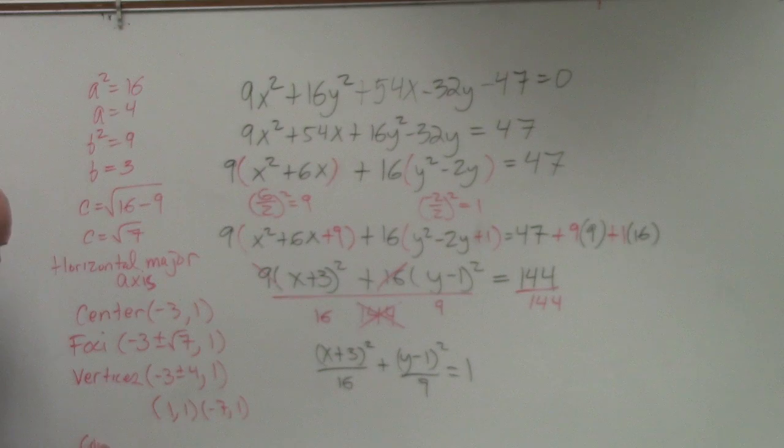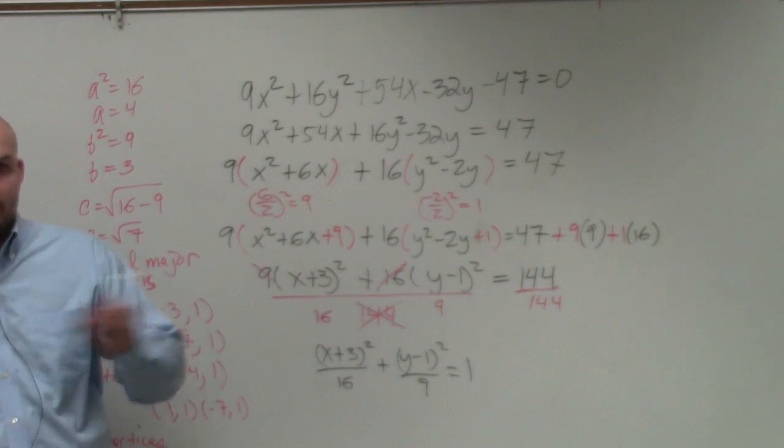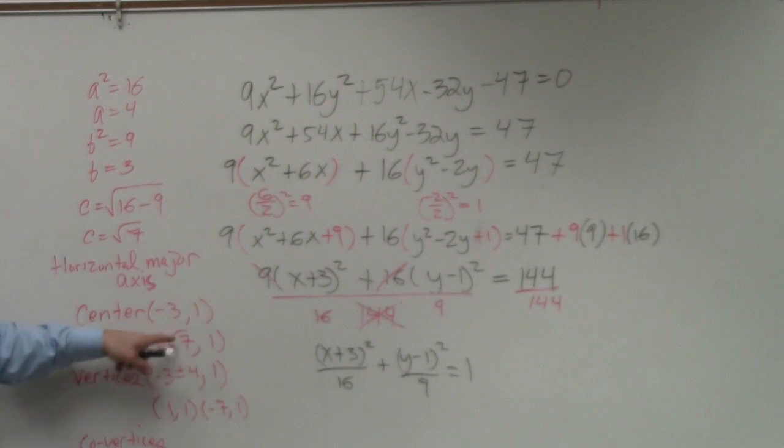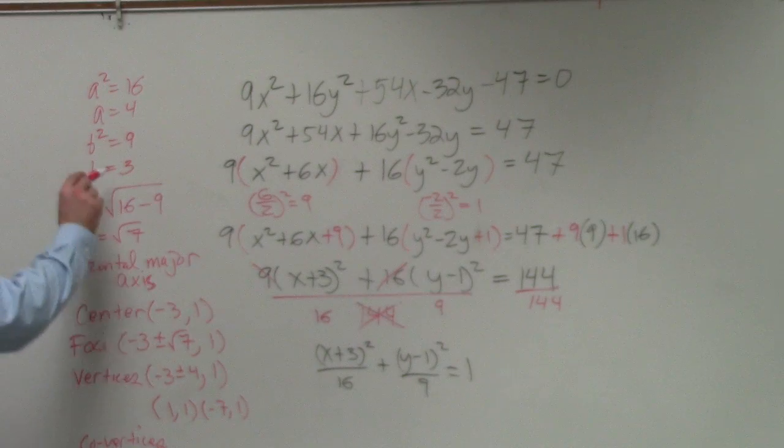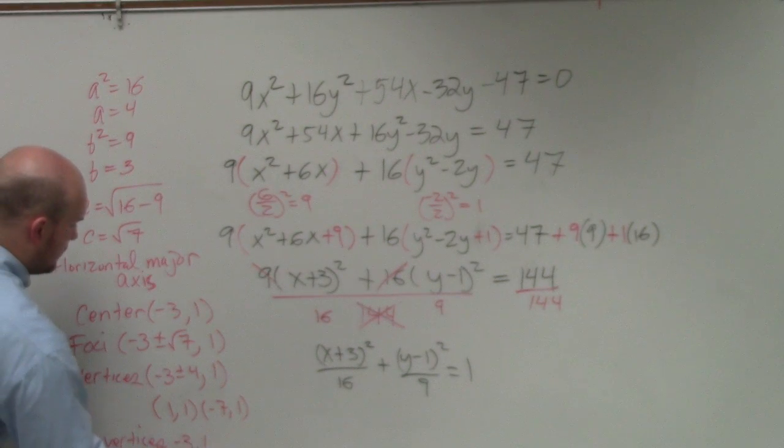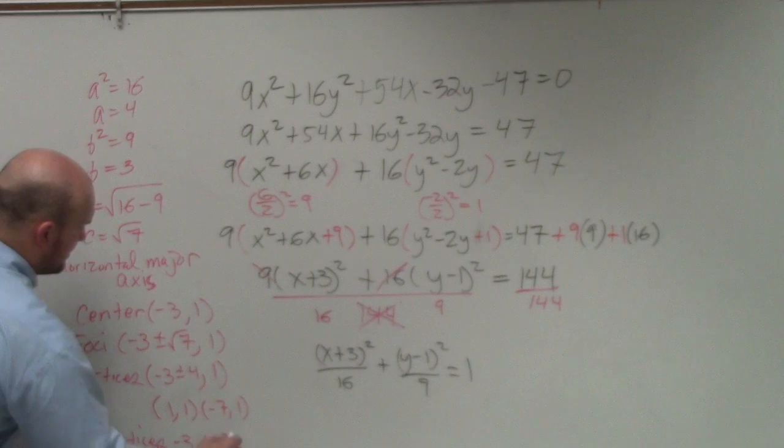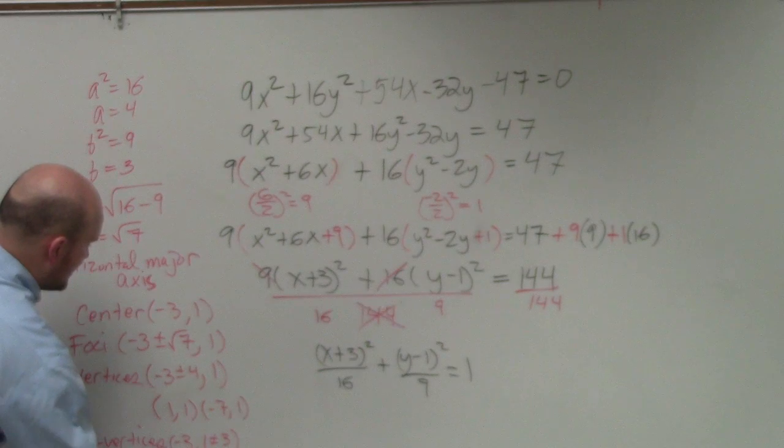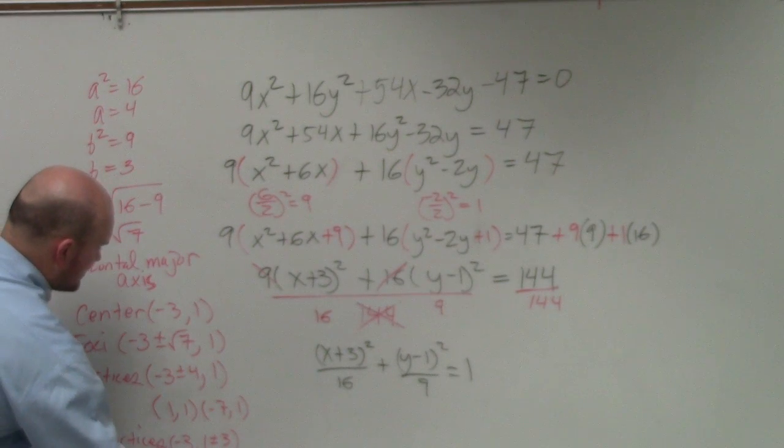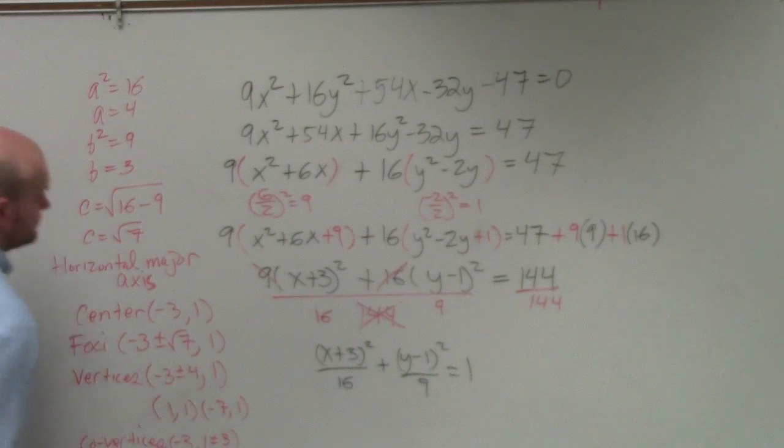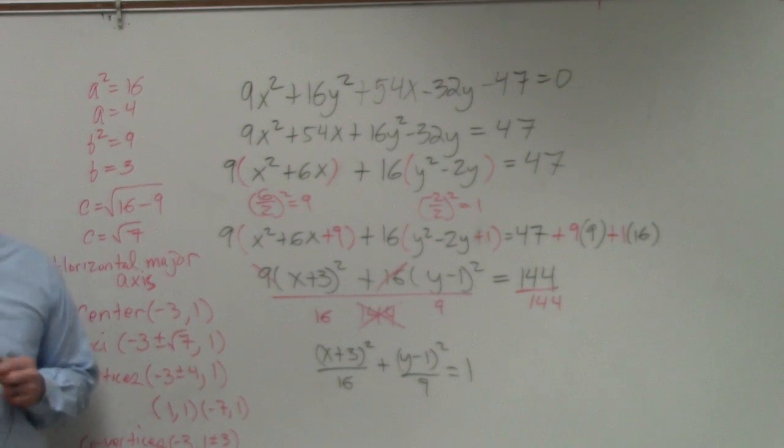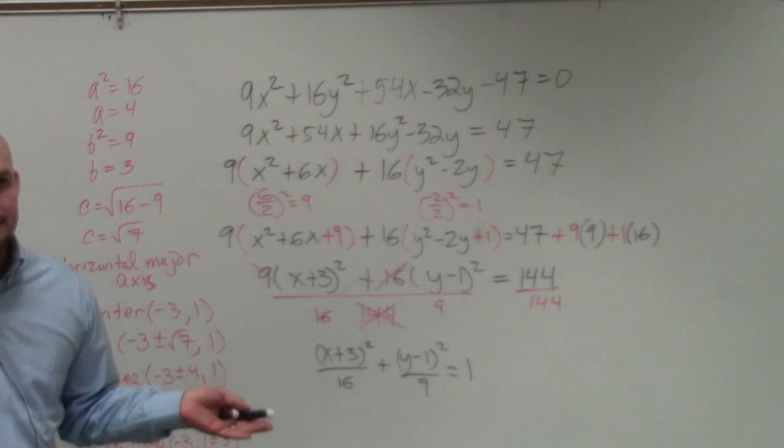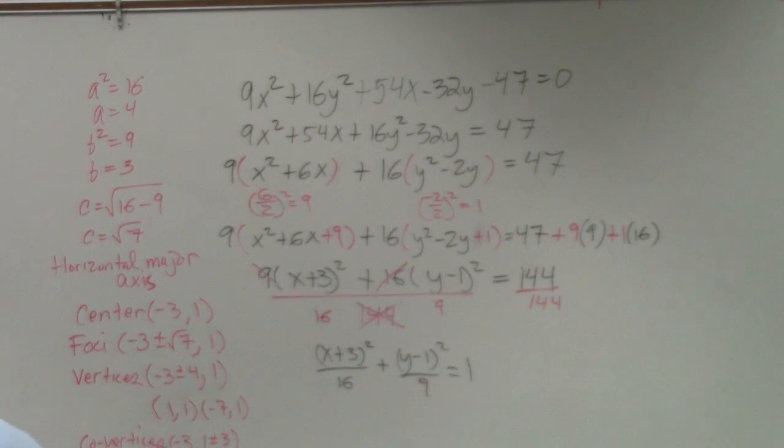And then our co-vertices, co-vertices are not left or right. Co-vertices are up or down. So we have to add and subtract from the y-coordinate. So that's going to be 3. So that's going to be negative 3 comma 1 plus or minus 3. You don't need to write the plus or minus here for this one. I'm just doing it so you guys see where I'm getting my answers. So that's negative 3 comma 4 and negative 3 comma negative 2. OK. And that's it. Done. It took me 8 minutes to teach that.